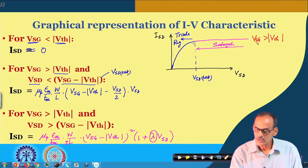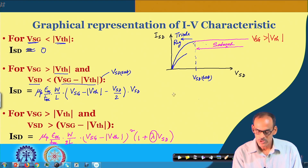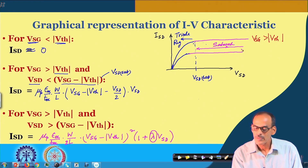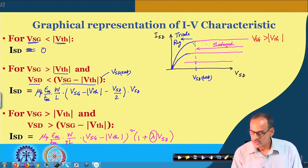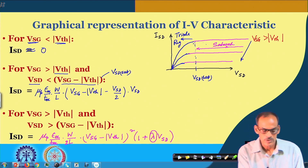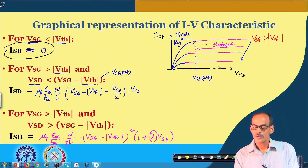If you decrease V_SG, you get similar characteristics, but the pinch-off happens at a different point because V_DSat depends on V_SG. So it enters saturation at a different voltage. As V_SG decreases toward V_TH, it enters the cutoff region. The cutoff region coincides with the V_SG axis.